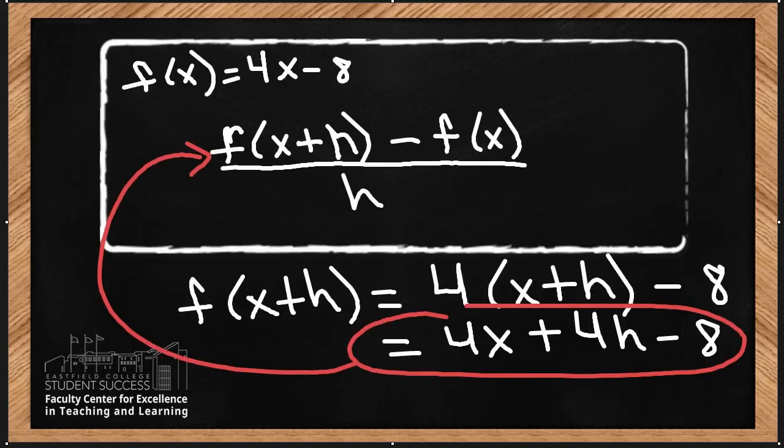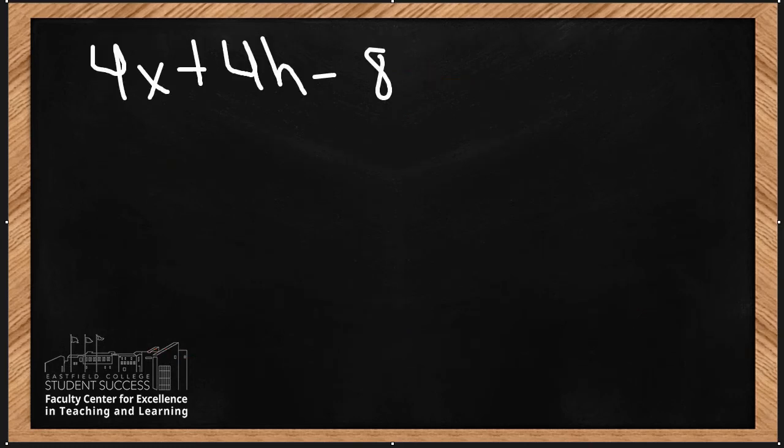Now going back to the difference quotient, as you can see it's asking you to subtract the original function, and this is the original function. So I am going to subtract 4x minus 8 and put it all over h.